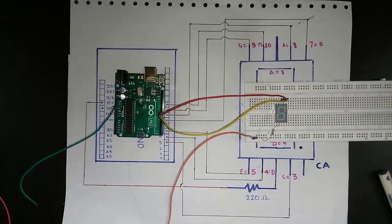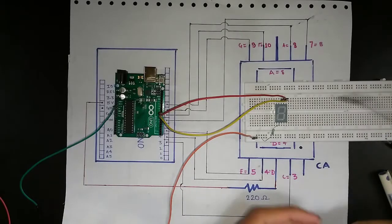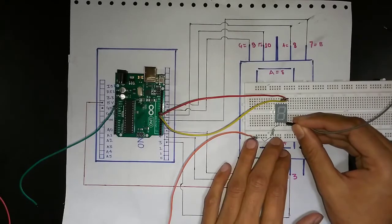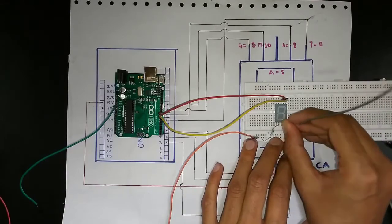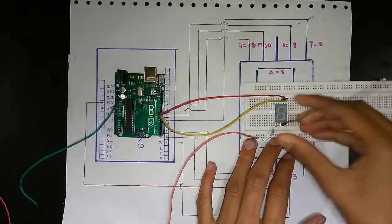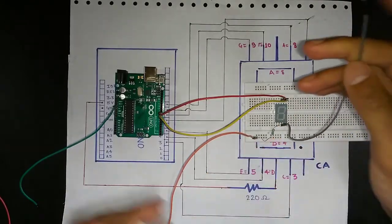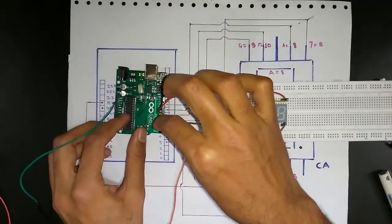Now similarly we will connect a wire to the C pin and connect it in the 3rd port of Arduino.